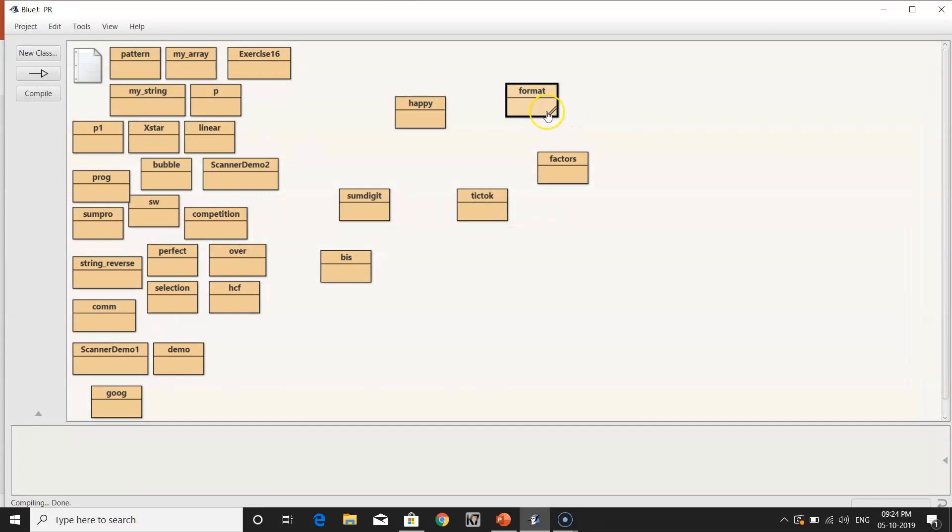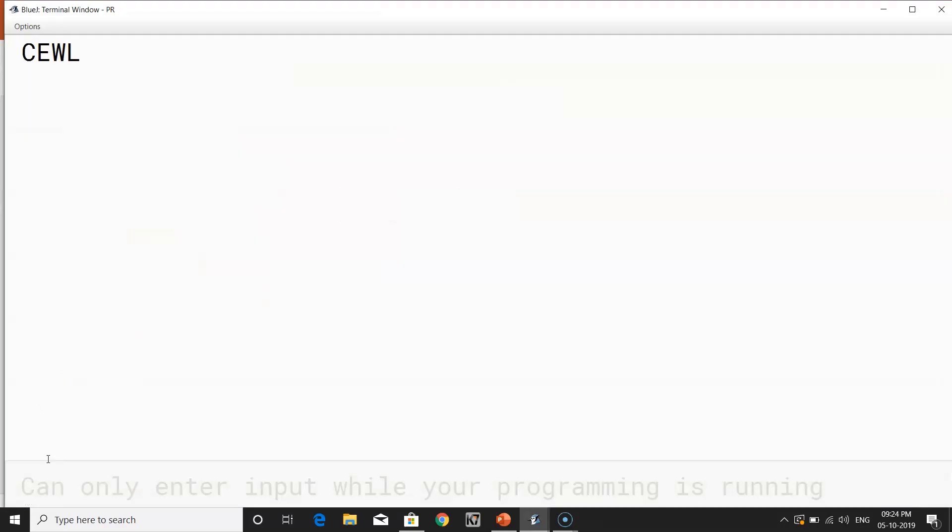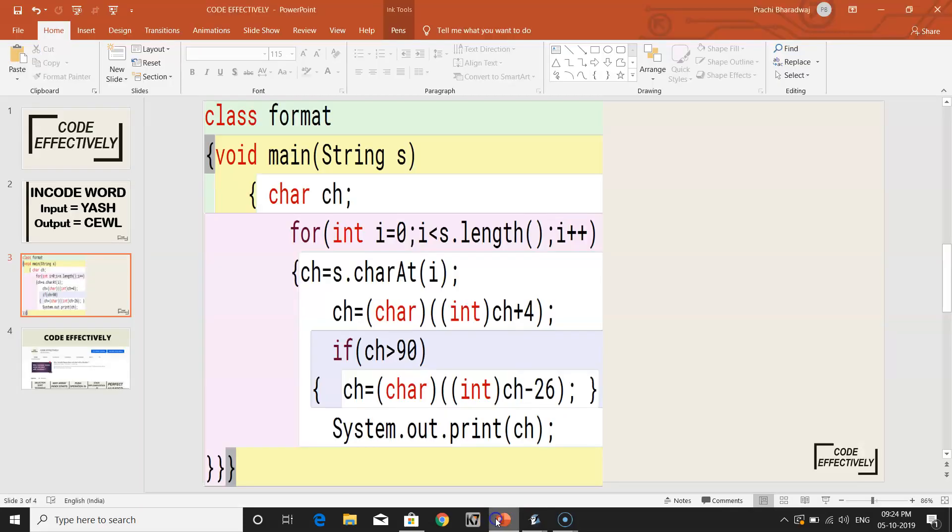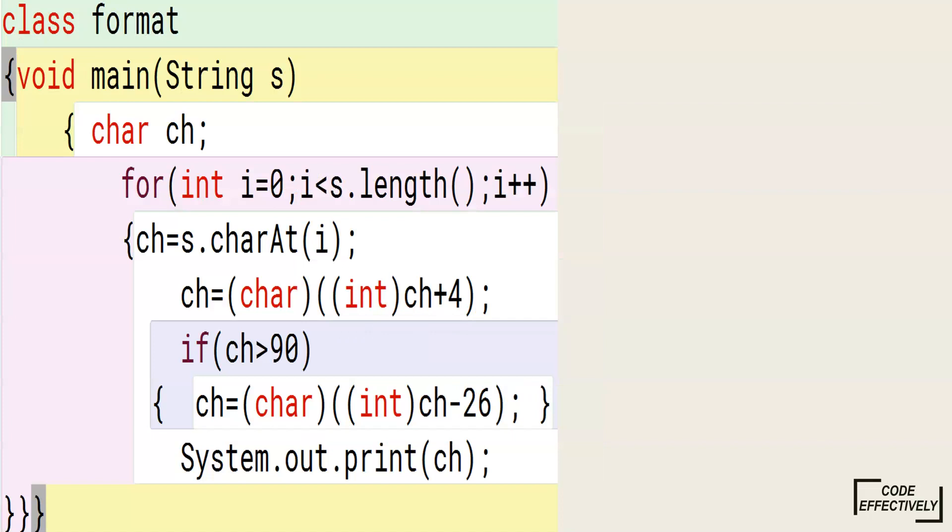Let's close this and run, make an object. After this object creation I will call my object and within this I will write the same string that I was writing: Y, A, S, H. And you can see the output is C, E, W, L.